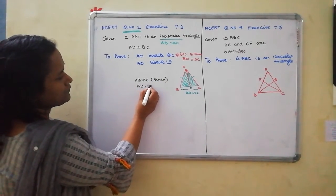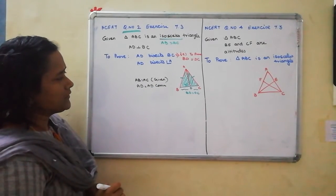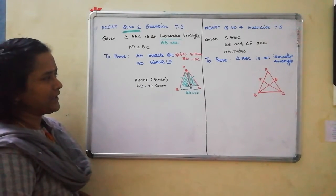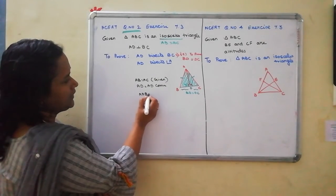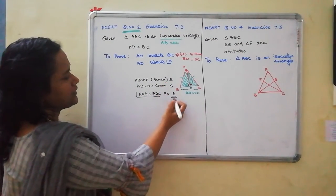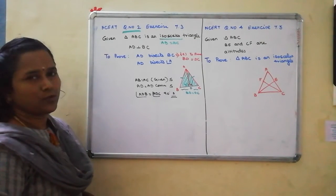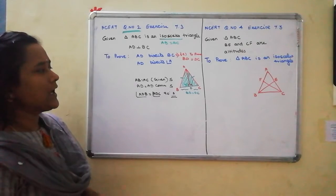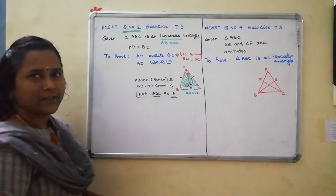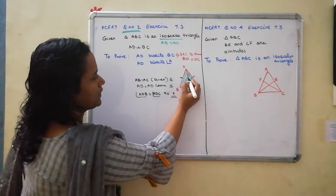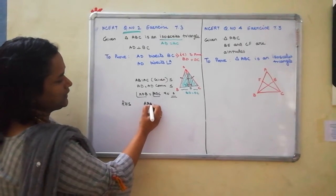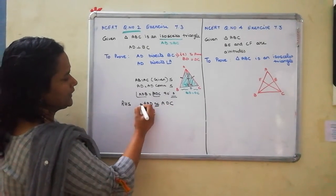Second, AD is common. And then one more — one of the angles is 90 degrees. Since AD is perpendicular to BC, angle ADB equal to angle ADC, both are 90 degrees, because of the linear pair. So we have side, side, and one angle — this is an RHS rule. Why RHS rule? Because the hypotenuses are equal, and one of the sides is equal. Therefore, by using RHS rule, these 2 triangles are congruent: triangle ABD congruent to triangle ADC.